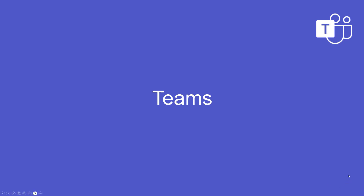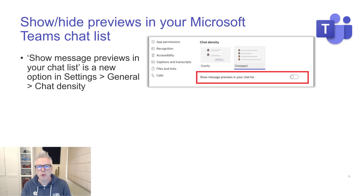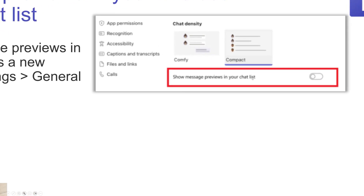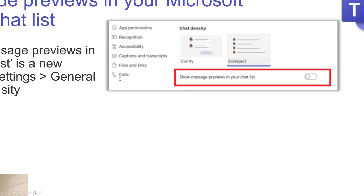Getting through this fairly quickly this month — a little bit quieter. We're now on to Teams. Show or hide previews in your Microsoft Teams chat list. In Teams settings under General, there's a chat density section with a new slider that gives you the ability to show or hide previews in your chat list.